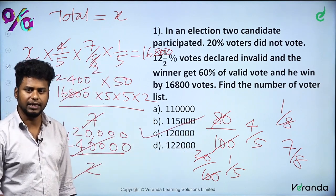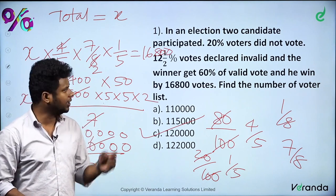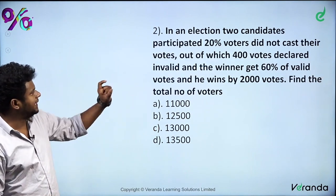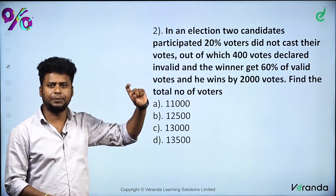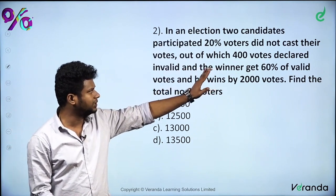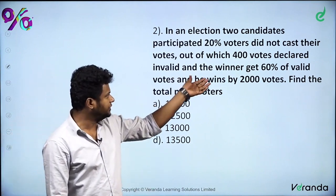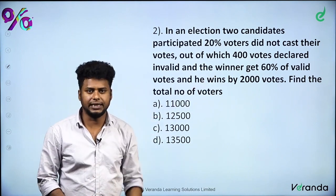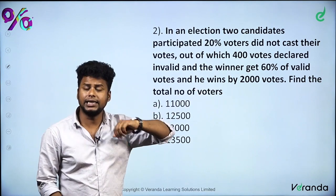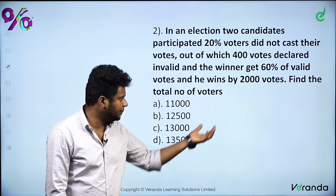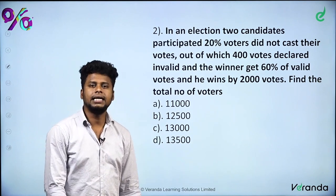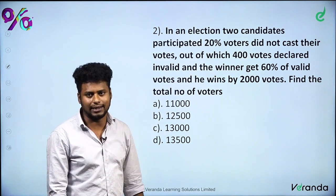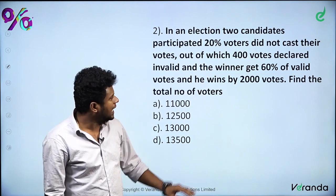You can use the best method — logical method or equation-based method. Now let's see a little change. In this election, two candidates participated. 20% of voters did not cast their votes. Out of the votes cast, 400 votes were declared invalid. The winner gets 60% of valid votes and won by 2,000 votes. Find the total number of votes. If you change the sum, we get 12.5% as a percentage, so it is easy for us to calculate.